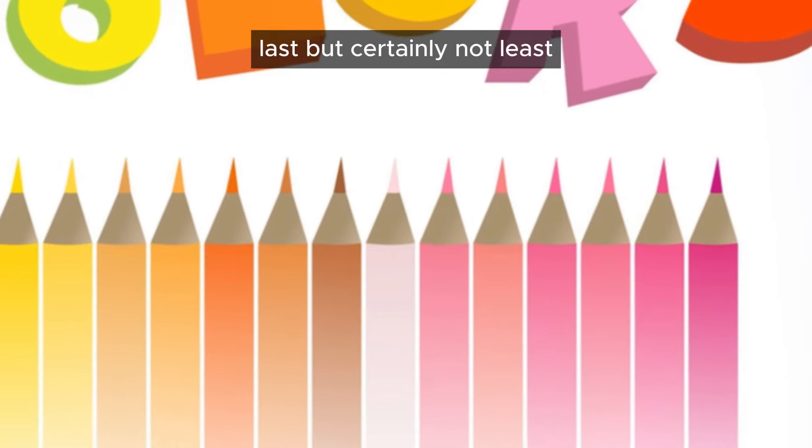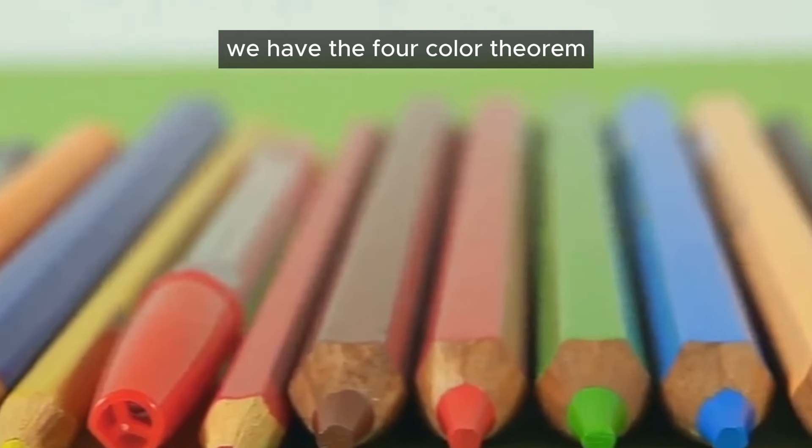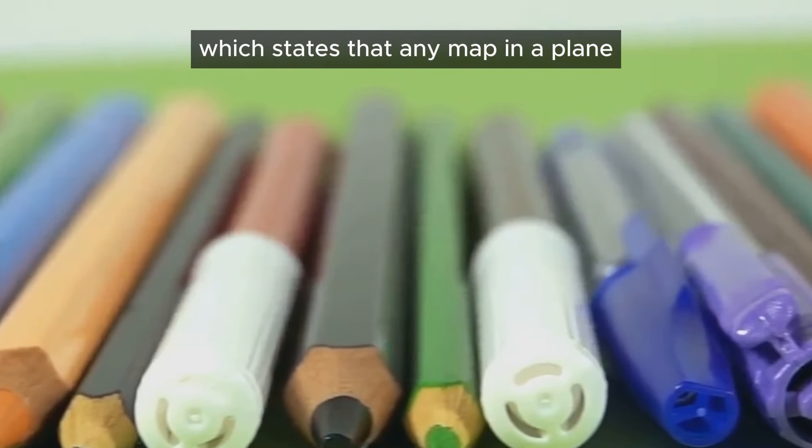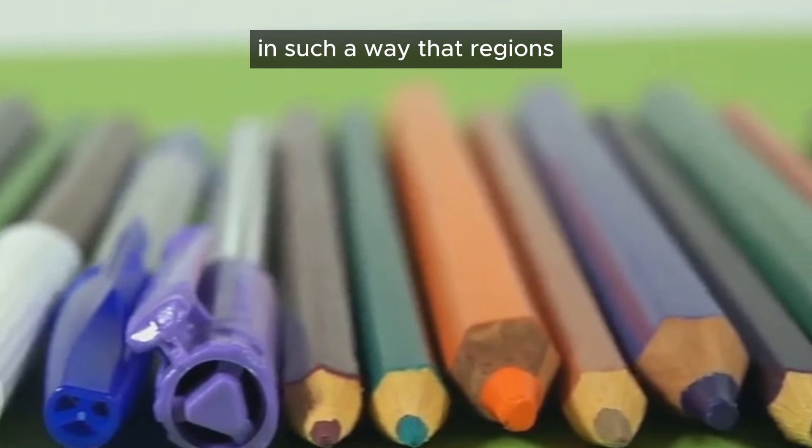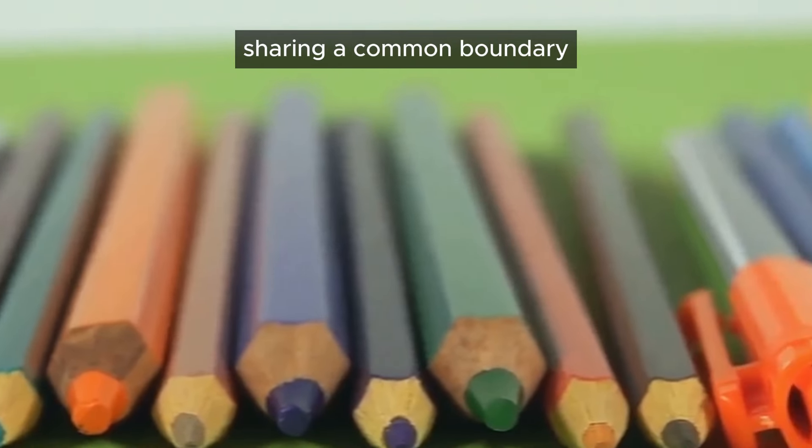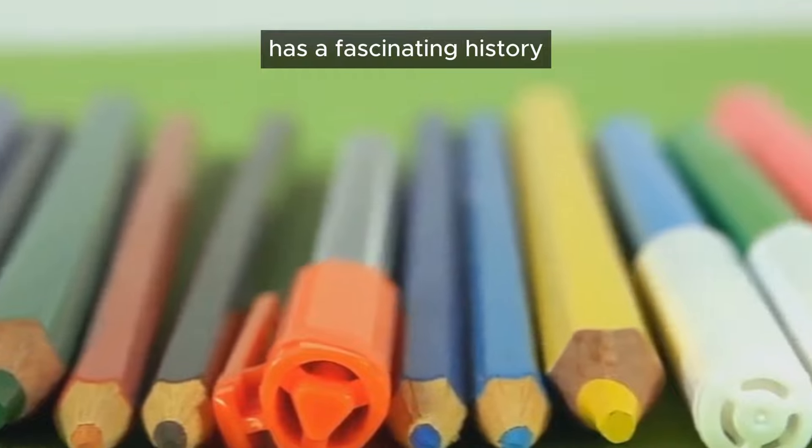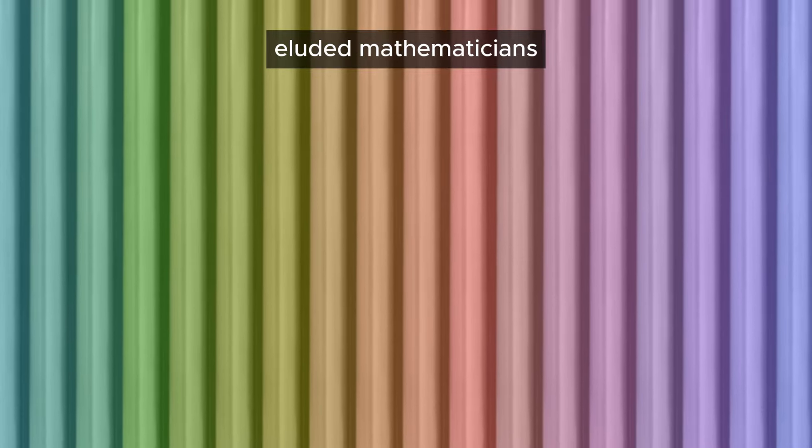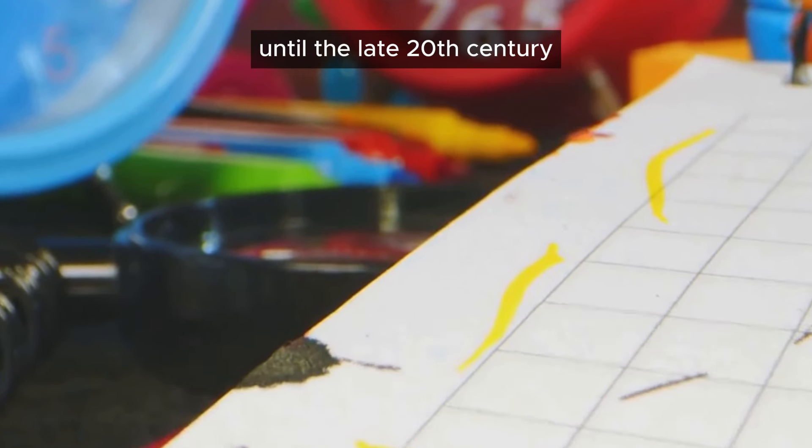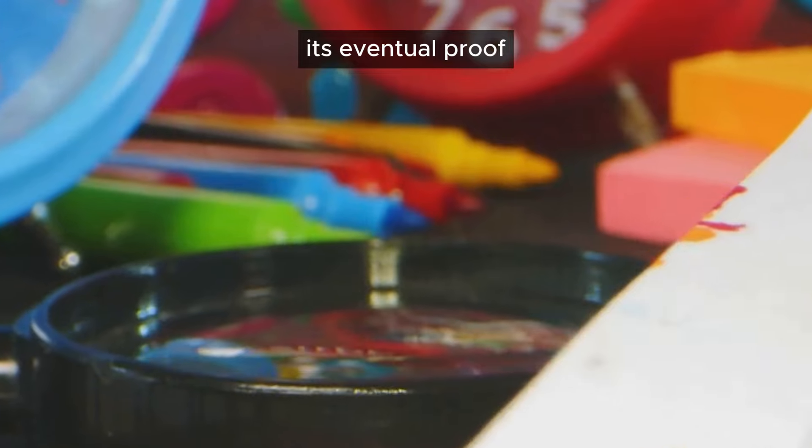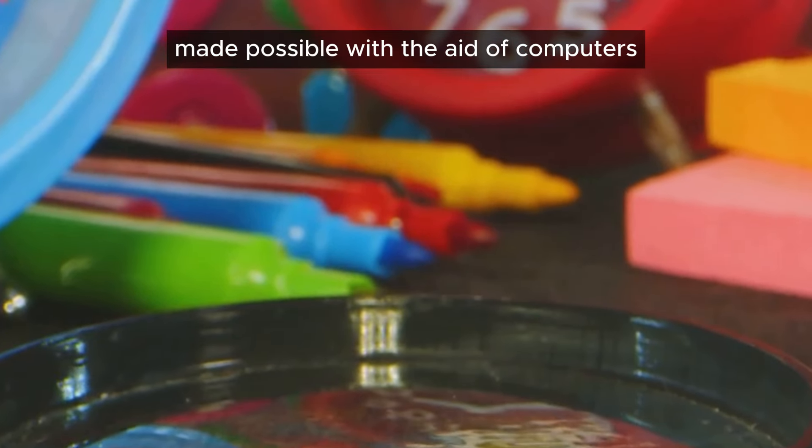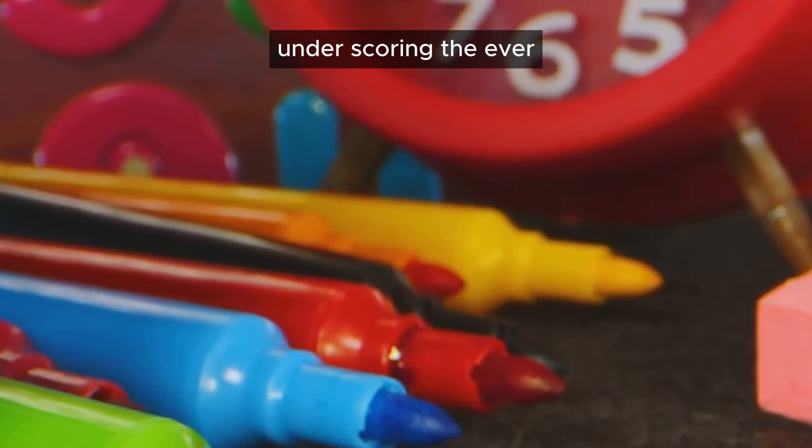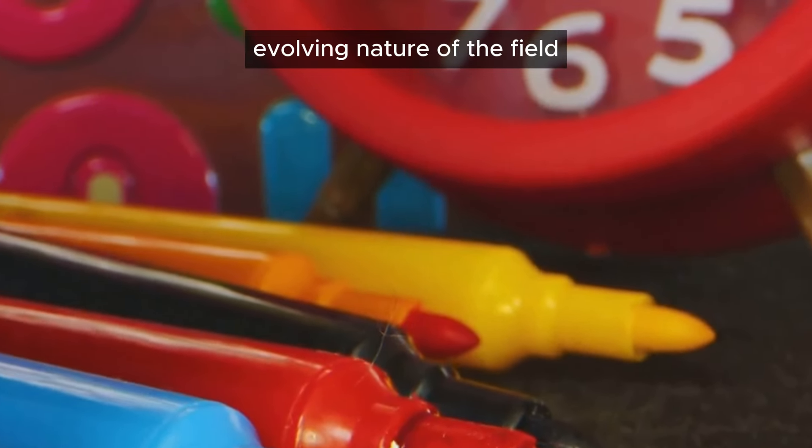Last, but certainly not least, we have the Four-Color Theorem. This theorem, which states that any map in a plane can be colored using four colors in such a way that regions sharing a common boundary do not share the same color, has a fascinating history. It was first proposed in the mid-19th century, but a proof eluded mathematicians until the late 20th century. Its eventual proof, made possible with the aid of computers, sparked debate about the role of technology in mathematical proof, underscoring the ever-evolving nature of the field.